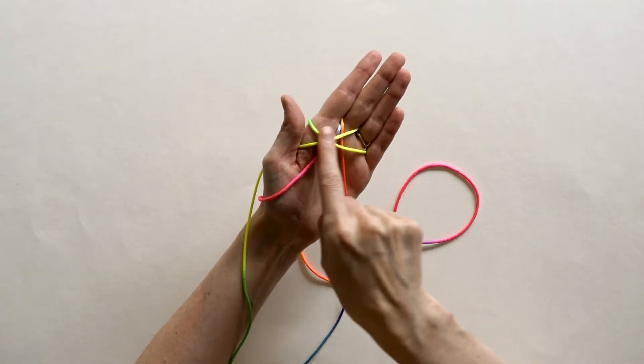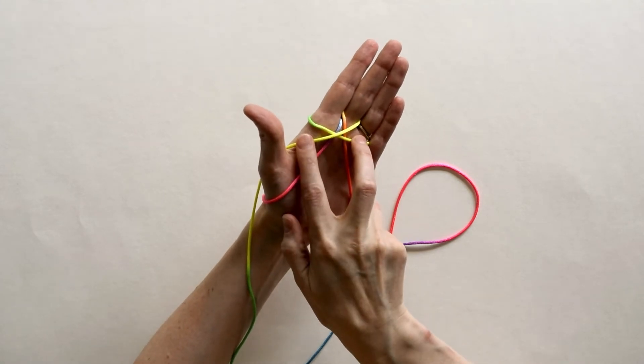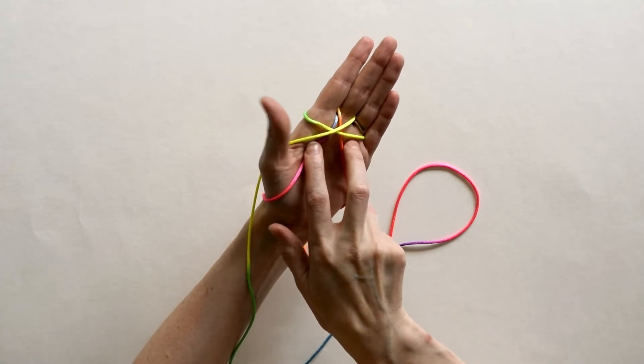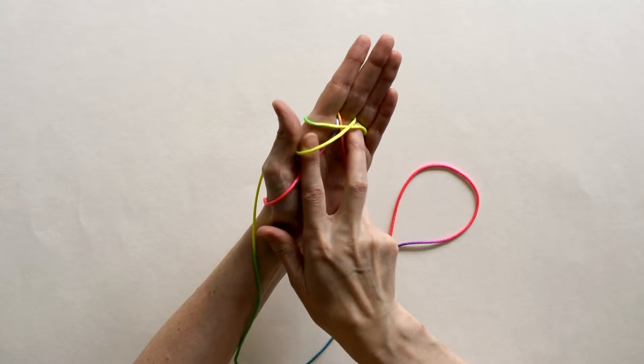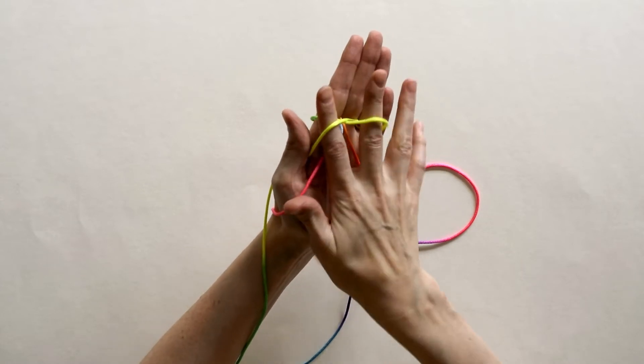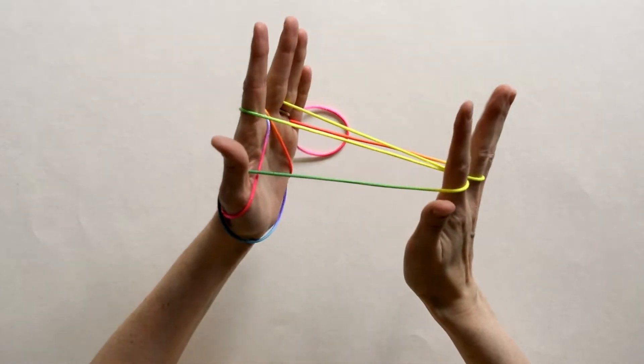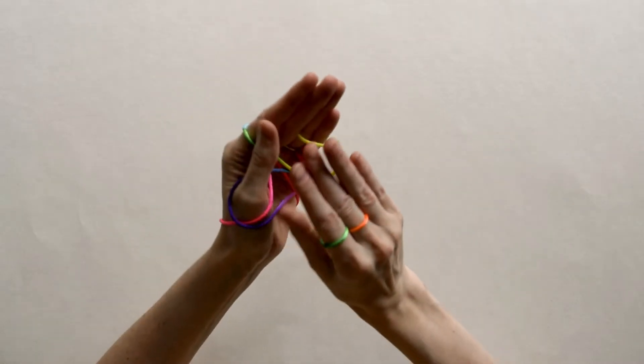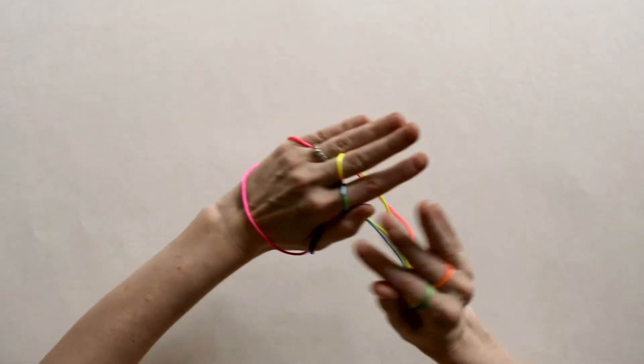You now have an X shape over your palm. You're going to take your index and middle finger of your right hand and go under the bottom loops of that X and pull back. Adjust it so that palm strap is there.